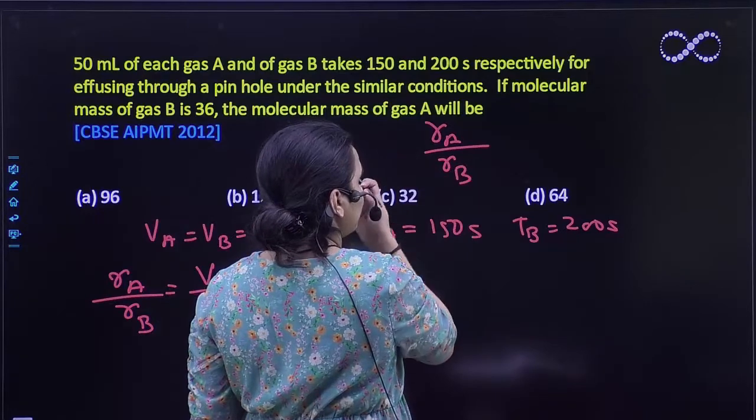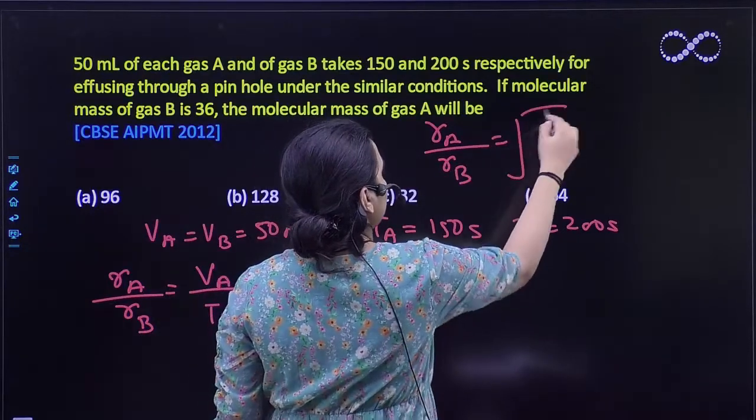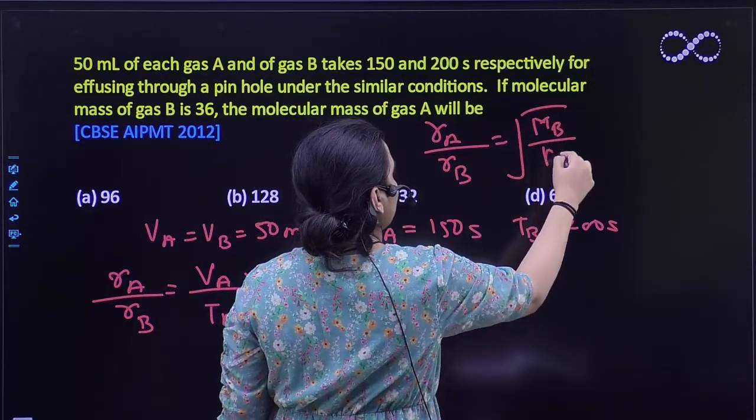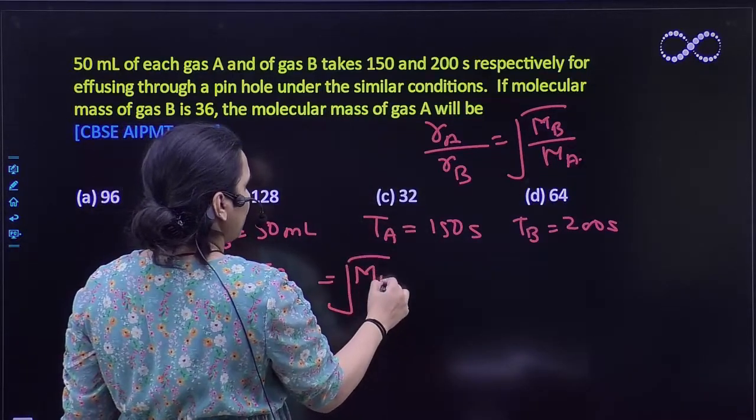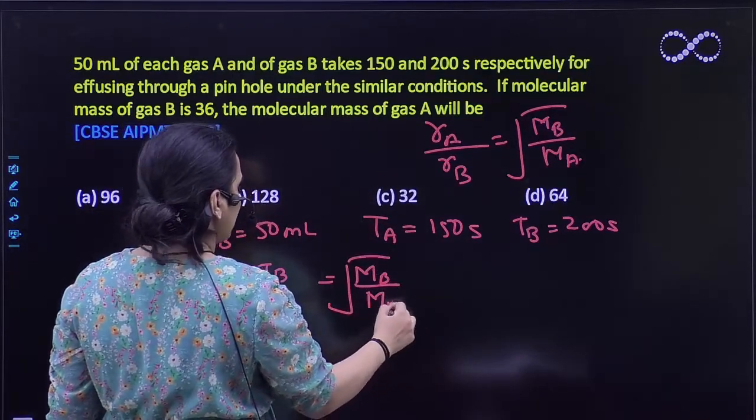...will be equal to molar mass of B by molar mass of A. So it is equal to square root of molar mass of B divided by molar mass of A.